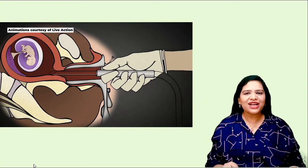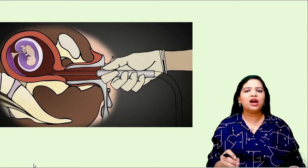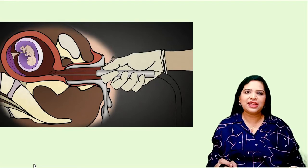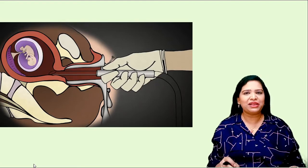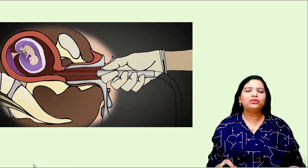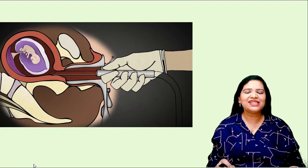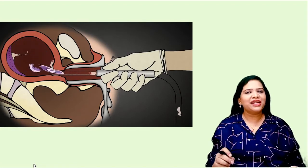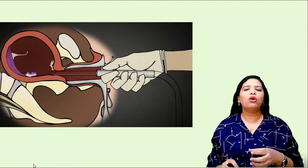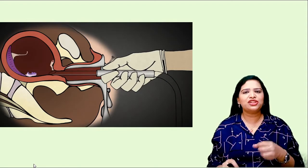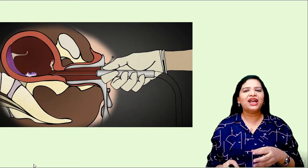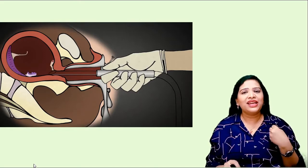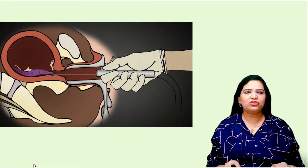This is how abortion is carried out. The fetus is growing in the mother's womb. The doctor will insert a vacuum pump into the uterus and suck out all the small organs and tissues of the baby — individually the hand will be sucked out, the legs will be sucked out, the body will be sucked out. This is a very cruel process.